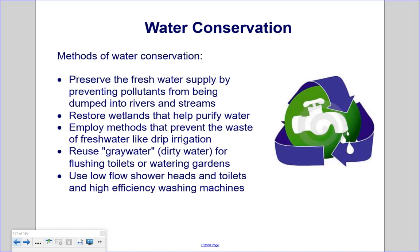Methods of water conservation include preserving the fresh water supply by preventing pollutants from being dumped into rivers and streams, restoring wetlands that help purify water, employing methods that prevent the waste of fresh water like drip irrigation, reusing gray water or dirty water for flushing toilets or watering gardens, and using low-flow shower heads, toilets, and high-efficiency washing machines.